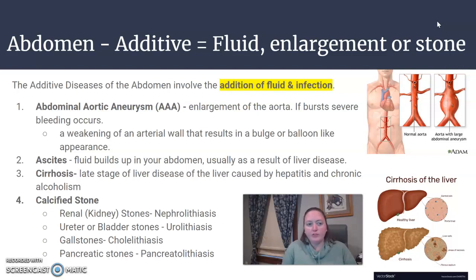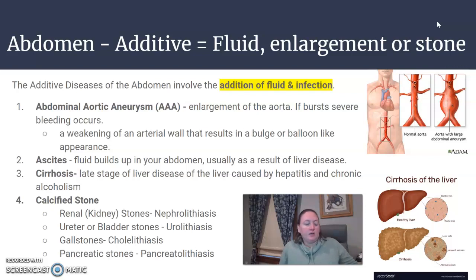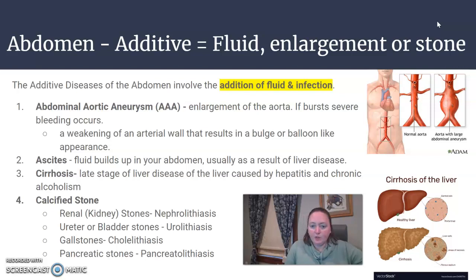We'll start with the AAA, which is your abdominal aortic aneurysm — this is the enlargement of the aorta. If it bursts, severe bleeding can occur and it has to be dealt with very quickly, as it can be life-threatening.